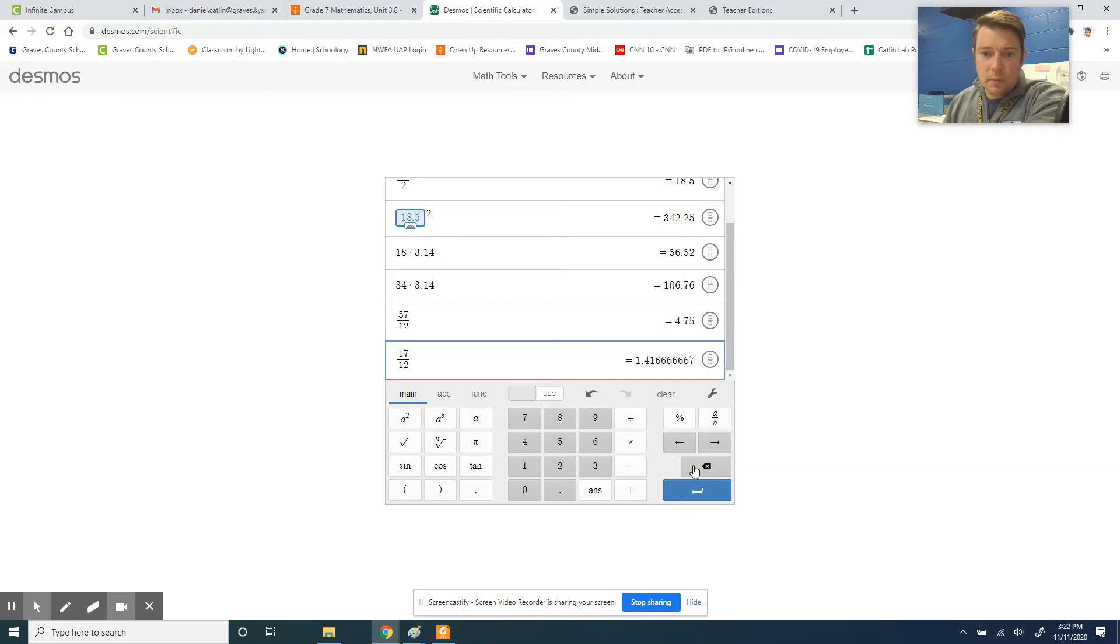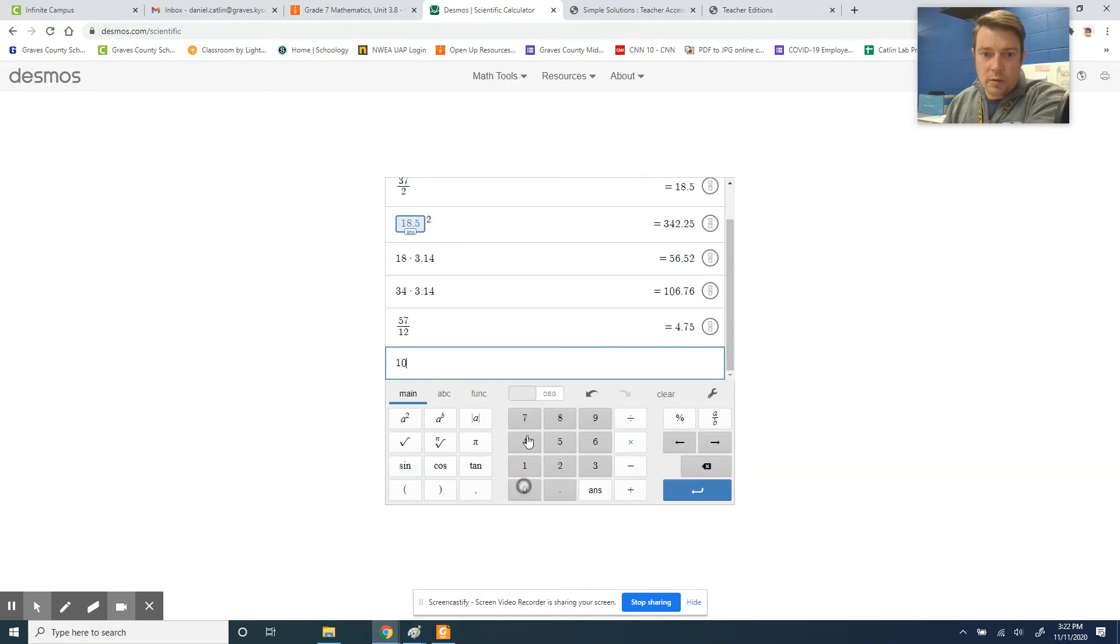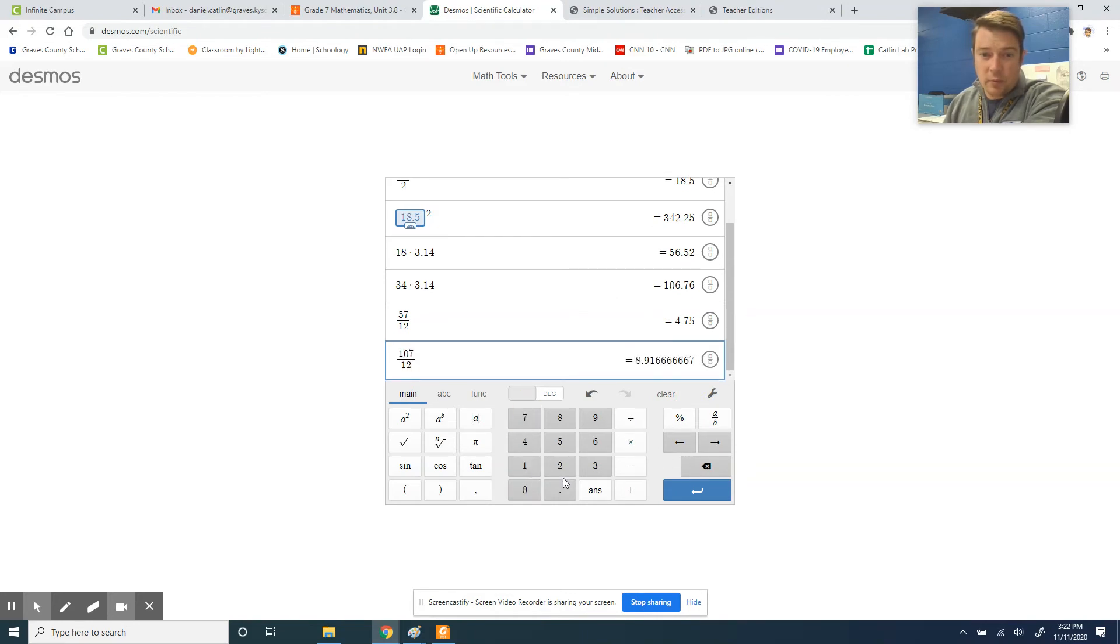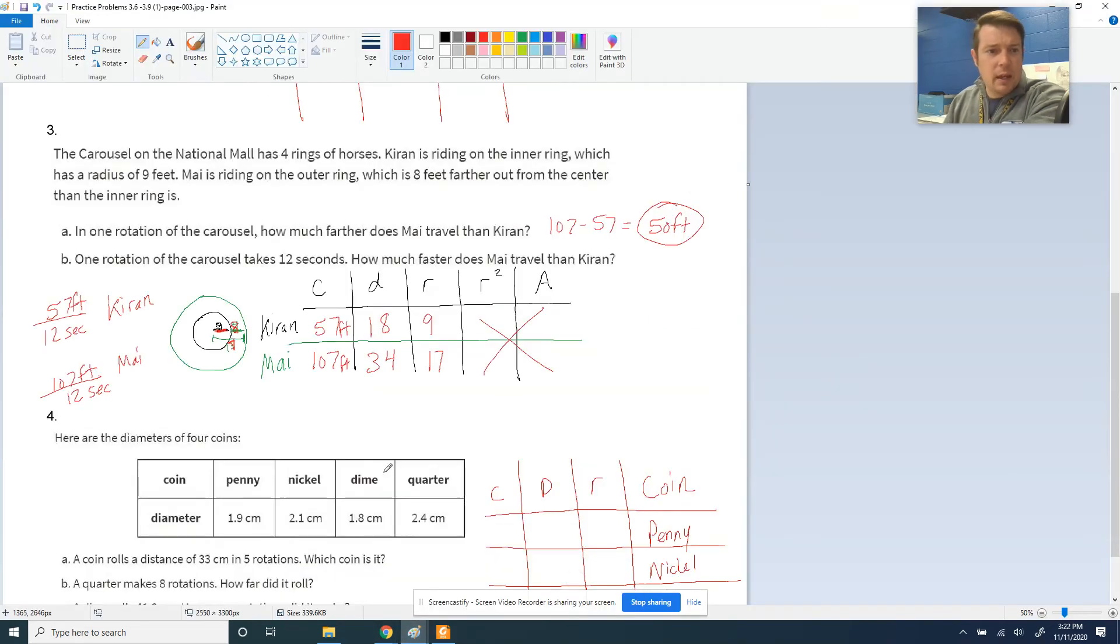So let's go with 4.8 to 8.9. 4.8 to 8.9. Kieran's going 4.8 and May's going 8.9. These are both feet per second. And so who's going faster? May's going a lot faster, and it appears about 4.1. So 4.8 subtracted from 8.9 is about 4.1 feet per second faster. There's our answer for part B.